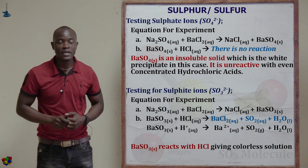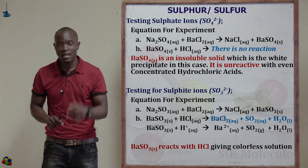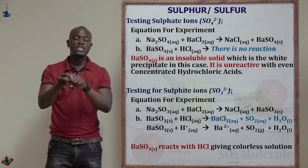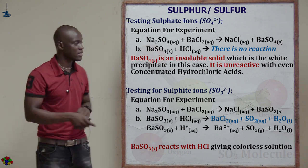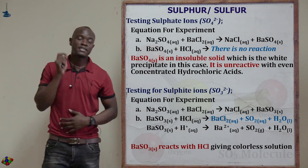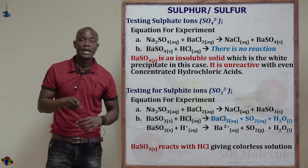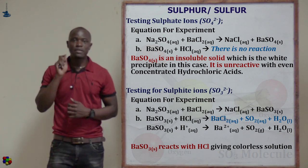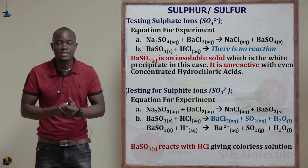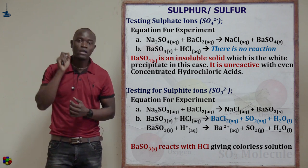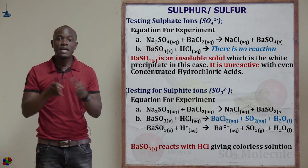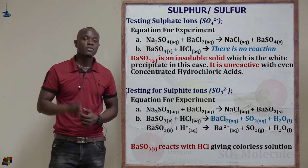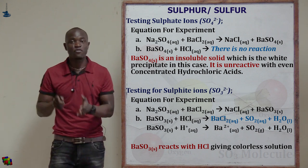When dilute hydrochloric acid is added to the precipitate containing barium sulfite, the precipitate dissolves immediately. But when dilute hydrochloric acid is added to the test tube containing barium sulfate, the white precipitate remains. The sulfite is BaSO₃ and the sulfate is BaSO₄. The sulfite precipitate dissolves in dilute hydrochloric acid to form barium chloride, sulfur oxide, and water molecules.